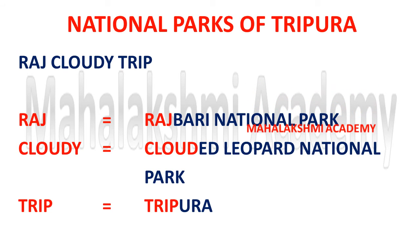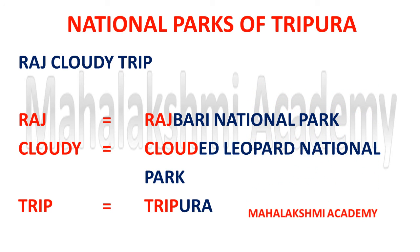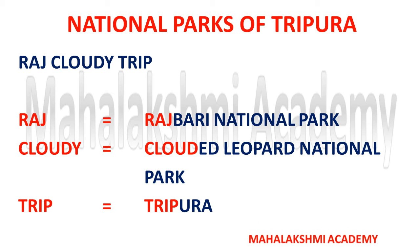Now we are in Tripura. The national parks of Tripura can be learned with the short code: 'Raj Cloudy Trip.' 'Raj' stands for Rajbari National Park, 'Cloudy' stands for Clouded Leopard National Park, and 'Trip' will remind you that the short code is related to Tripura.